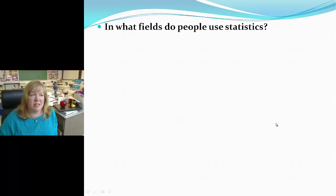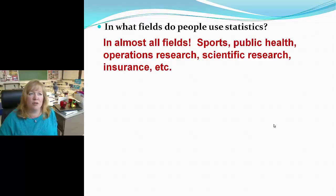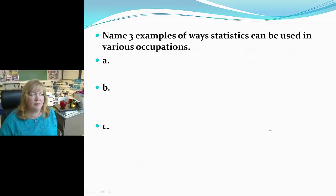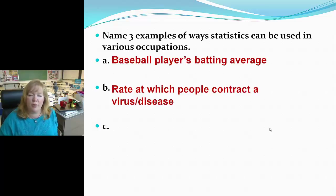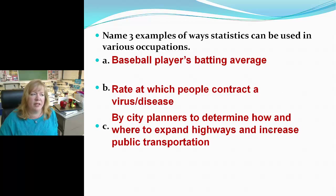In what field do people use statistics? Almost all of them — sports, public health, operations research, scientific research, insurance, and so on. Three examples of statistics in various applications: a baseball player's batting average; the rate at which people contract a virus or disease; and by city planners to determine how and where to expand highways and increase public transportation. There are so many areas where statistics can be used.